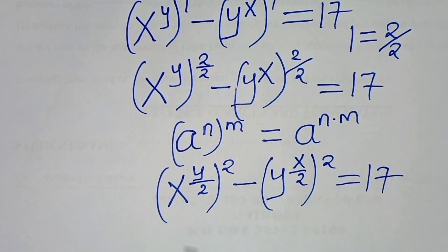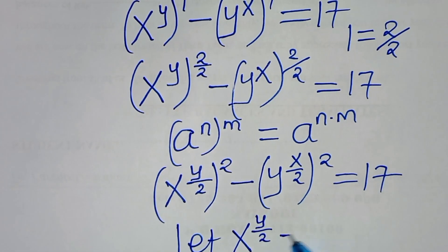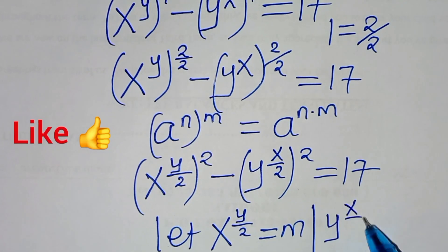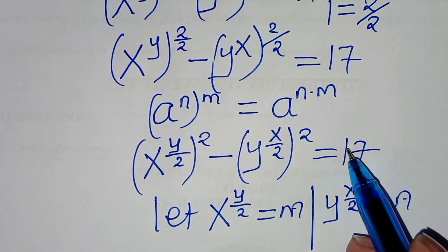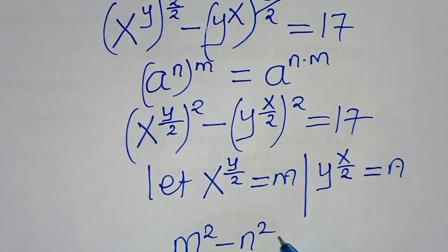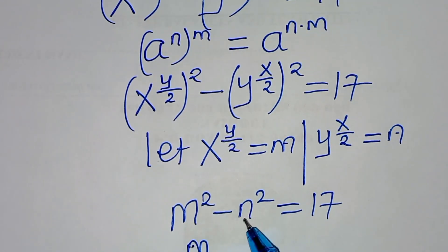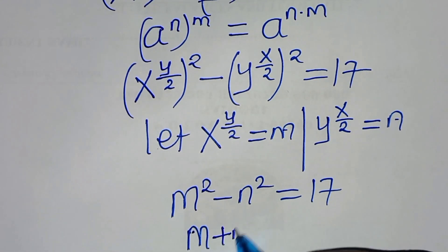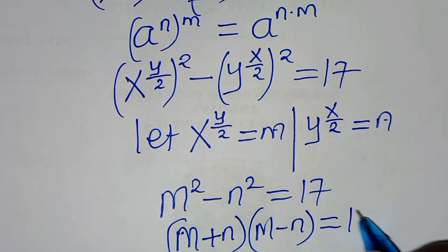The next step is that we let x to the power of y over 2 be equal to m, and we let y to the power of x over 2 be equal to n. Substituting m and n into the equation, we have m squared minus n squared equals 17. This is the difference of two perfect squares, which we can express as (m + n)(m − n) = 17.